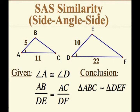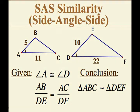Side-Angle-Side Similarity. If the measure of two sides of a triangle are proportional to the measure of two corresponding sides of another triangle, and the angles between them are congruent, then the triangles are similar.